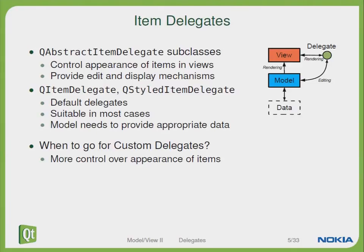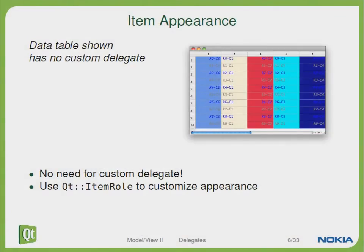So when do we go for custom delegates? One example would be that we would like to gain more control over the appearance of the items. Here is a small example about item appearance — if you would like to display your table as shown here, you don't really need a custom delegate because you can use normal Qt functionality like the item role to customize the appearance of your table.